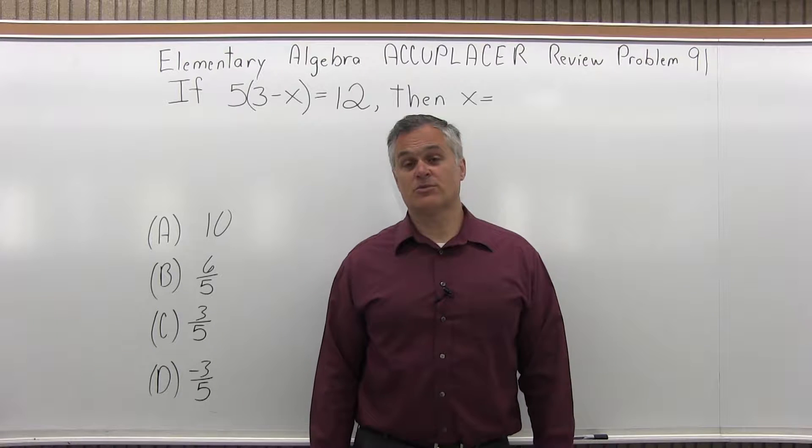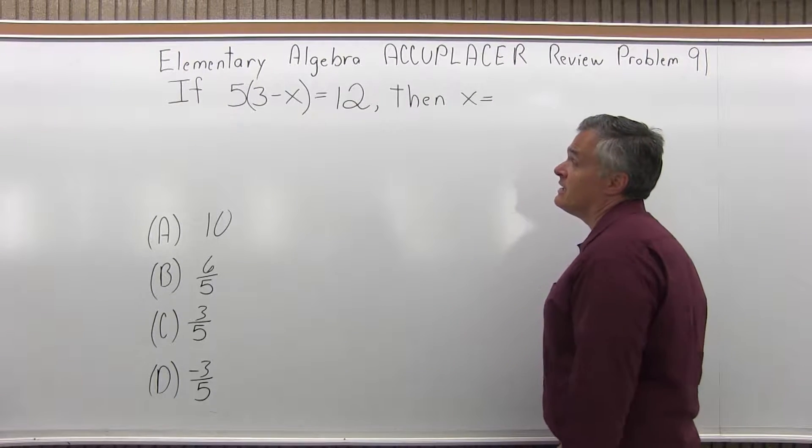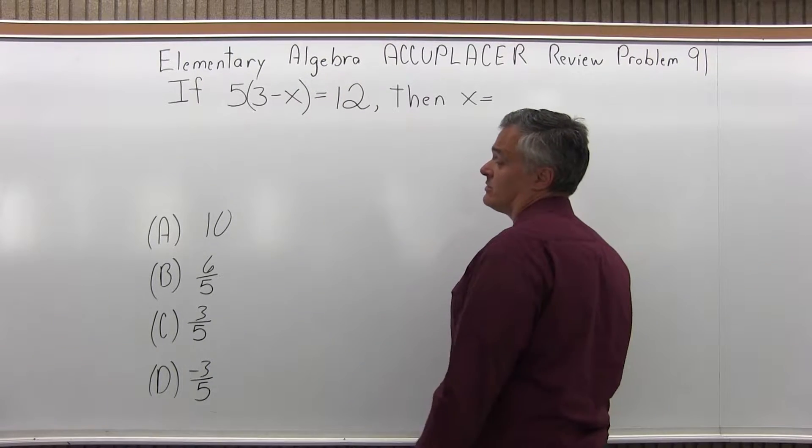This is the Elementary Algebra Accuplacer Review, Problem 91. It says, if 5 times 3 minus x equals 12, then x equals what?